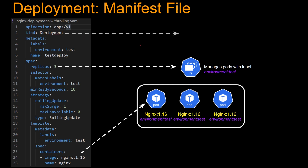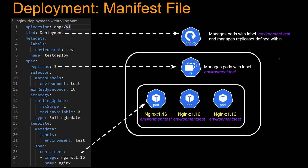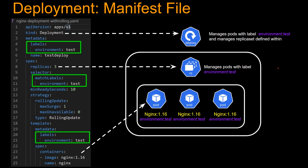At the top level we have kind deployment, which creates the deployment object. How does it know it should manage this replica set and these pods? This goes back to labels — labels are super important. Under the deployment, the labels is environment test. And under the template metadata for the containers, the labels is also environment test. If those labels match, then this deployment is going to manage these pods. This replica set will also have its own label environment colon test, which matches the label of the deployment — that's how the deployment will manage this replica set.